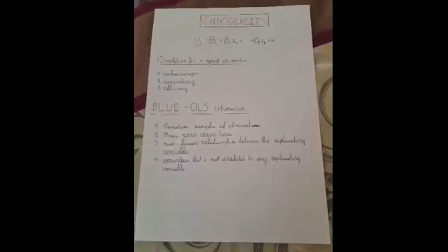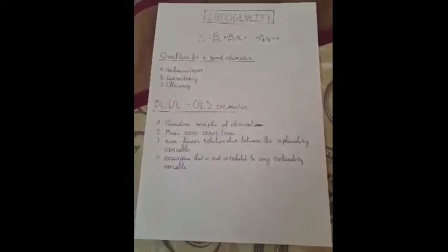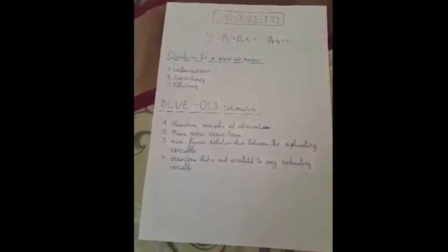It is empirically impossible to identify the error term u, and therefore the correlation of the error term with the explanatory variables. Therefore, we cannot statistically ensure that an endogeneity problem has been solved.